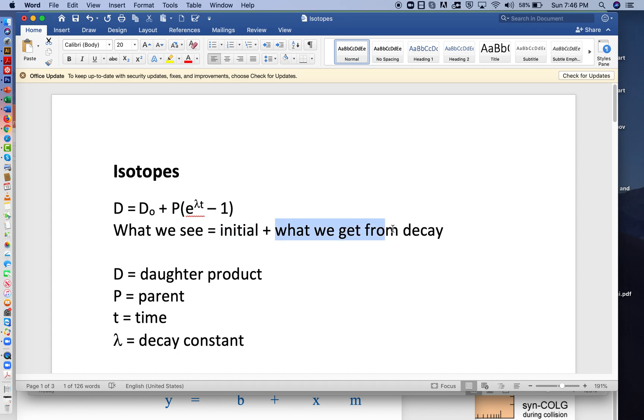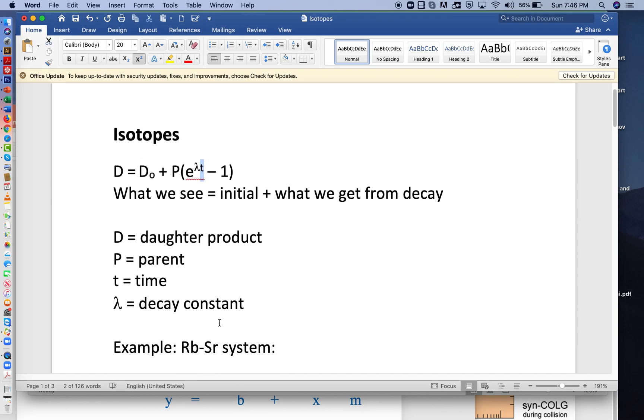This part here, what we get from decay, is where P is the parent element and t is time. Lambda is the decay constant that tells us how fast the parent decays into the daughter.